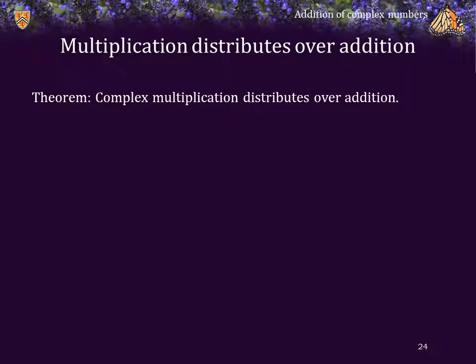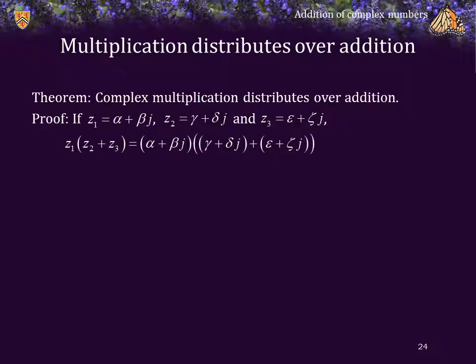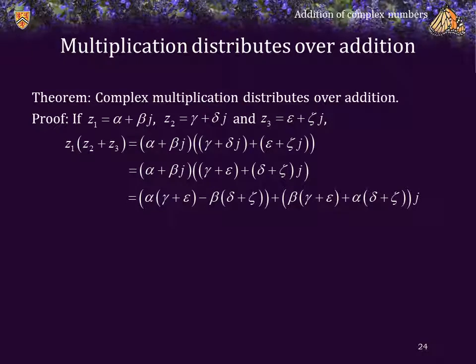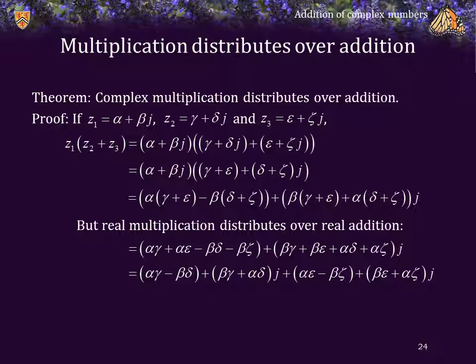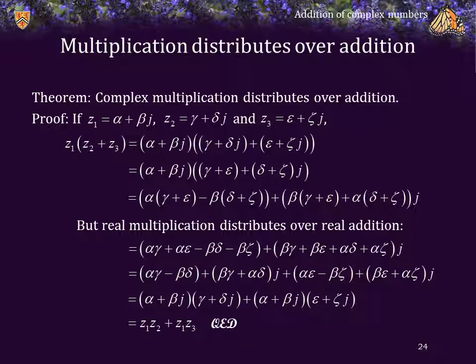Finally, we're going to demonstrate that multiplication does indeed distribute over complex addition. Let z1, z2, z3 be these three complex numbers. Then z1 times the sum of z2 and z3 is the expression on the right-hand side. Adding the two numbers, then multiplying by alpha plus beta j, we notice that real multiplication distributes over real addition, and using commutativity and associativity, we can rearrange entries and see that this simplifies to z1 times z2 plus z1 times z3. So multiplication of complex numbers does distribute over complex addition.